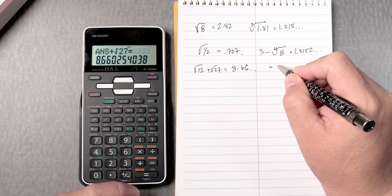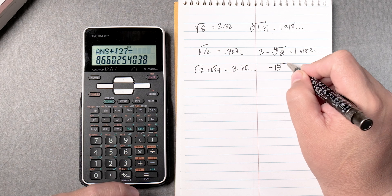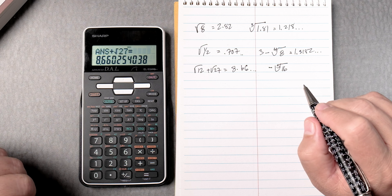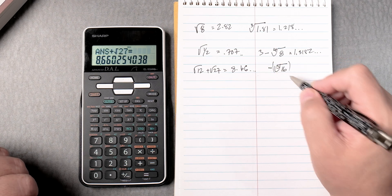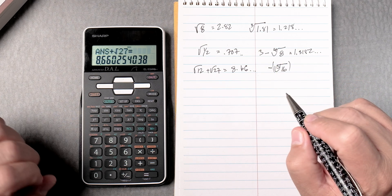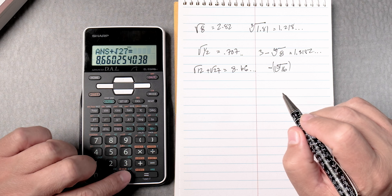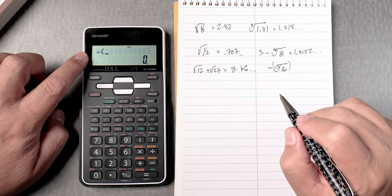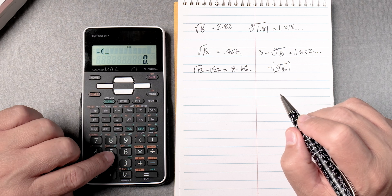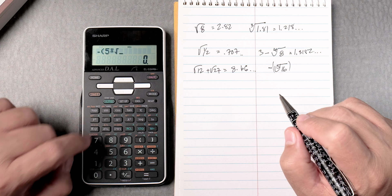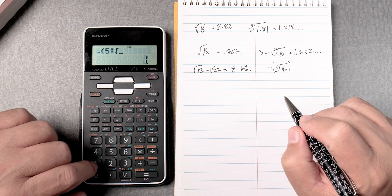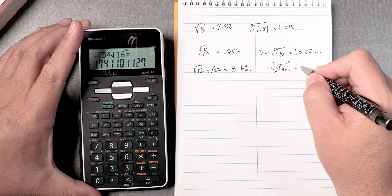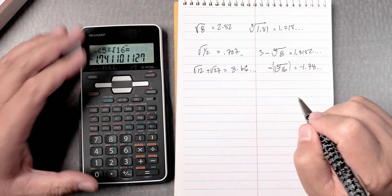Let's say negative the fifth root of 16. This one, definitely we're going to have to put parentheses because of the interface. So we put negative and then parentheses. Then you can put the 5, second, y to the x key, 16, and then press equals and it gives you negative 1.741 and more.